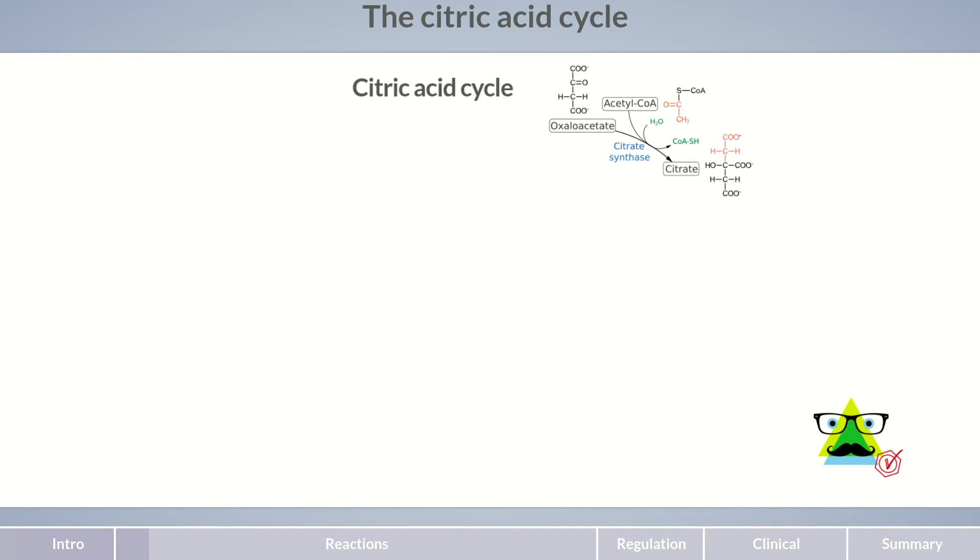Oxaloacetate serves as a carrier molecule for the acetyl unit. This is why the citric acid cycle can be seen as being split into two parts. In the first part, two carbon dioxide molecules are split off. In the second part, the carrier molecule is regenerated.